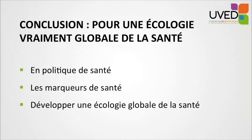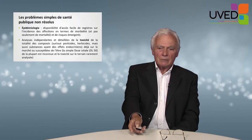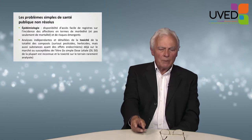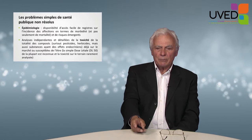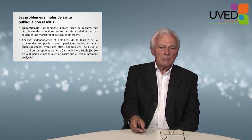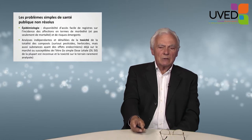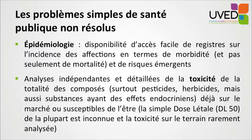To conclude: in the field of health policies, we need health markers. There are already quite a few around, but we need more. And we need to develop a science called health ecology — simple problems of public health that are not yet solved, which are still unanswered. Epidemiology, easy access to registries regarding incidents of infections in terms of morbidity and not only mortality, and emerging risks.